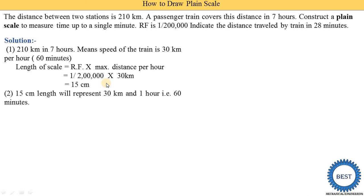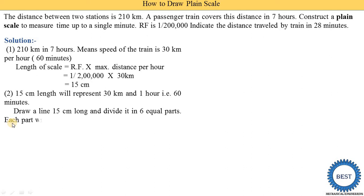So, 15 centimeters of length will represent 30 kilometers. This scale covers 30 kilometers, which corresponds to 1 hour — that is, 60 minutes. On the same scale, we are indicating two units: one is kilometers and the second is minutes. Draw a line 15 centimeters long and divide it into 6 equal parts; each part will represent 5 kilometers and 10 minutes.